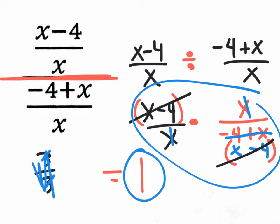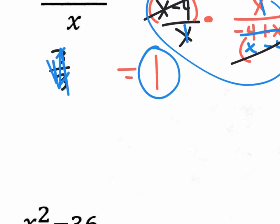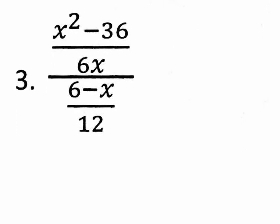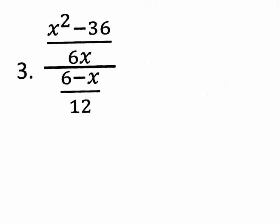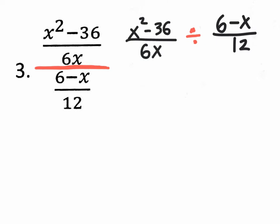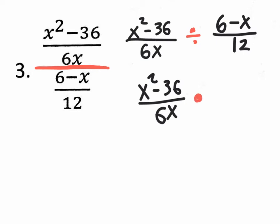Of course we are going to have problems that have more complicated answers — fractions with variables and stuff. Number three gets more fun. First it's vertical — go ahead and write it horizontally. Notice I drew the division bar in red so you can see the red division sign right there. So it's the top one divided by the bottom one. I didn't flip anything yet. The only time you flip is when you change the division to multiplication, and it's very important that you only flip the second fraction. The first fraction stays the same — only flip the second fraction.